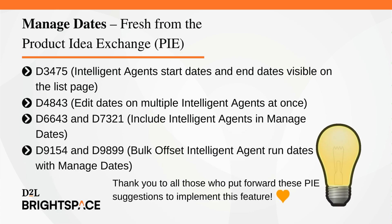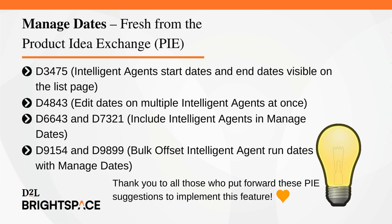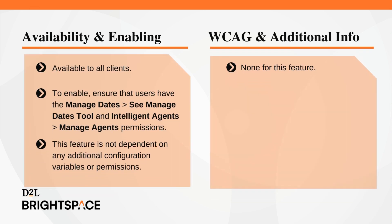The Managed Dates feature implements the following PI items: D3475 — Intelligent Agent Start Dates and End Dates Visible on the List Page; D4843 — Edit Dates on Multiple Intelligent Agents at Once; D6643 and D7321 — Include Intelligent Agents in Managed Dates; and D9154 and D9899 — Bulk Offset Intelligent Agent Run Dates with Managed Dates. Thank you to all those who put forward these PI suggestions. The Managed Dates feature is available to all clients. To enable, ensure that users have the Managed Dates, See Managed Dates tool, and Intelligent Agents — Managed Agents permissions enabled for their roles.